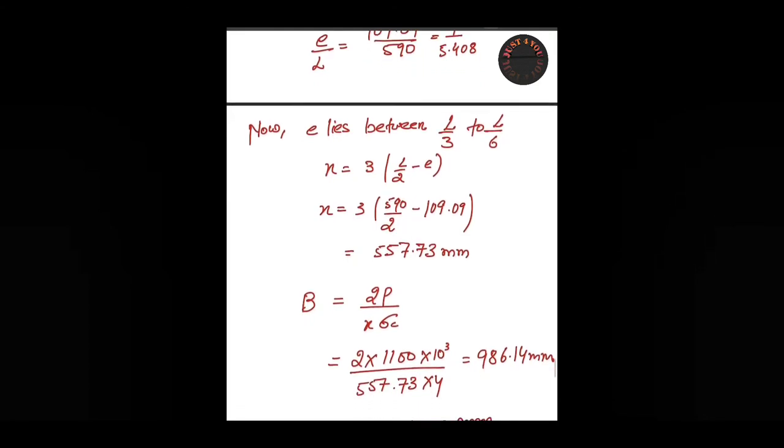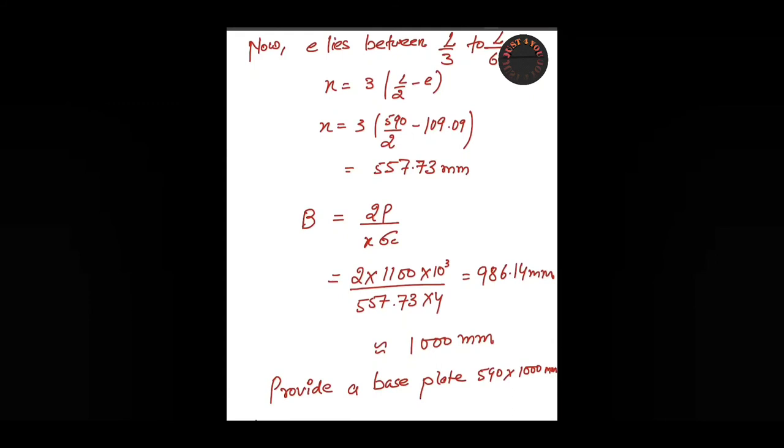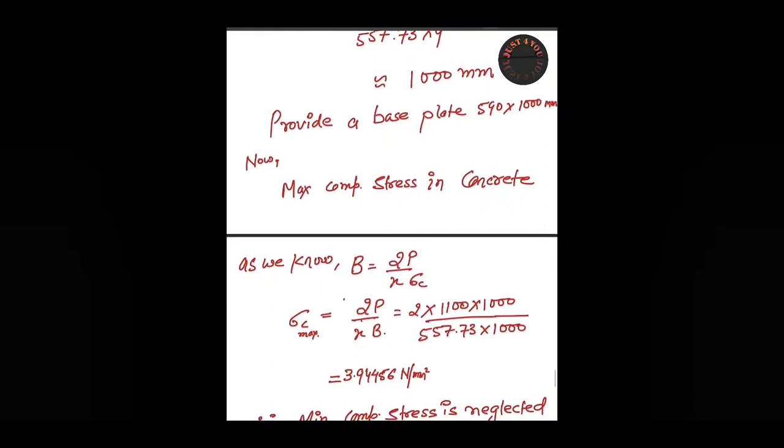For finding the width we use the equation 2P/(x·σc). The value of P is 1100×10³, σc is 4, and x is 557.73. We get 614 mm, which we can take as 1000 mm. So we are providing a base plate of 590×1000 mm.